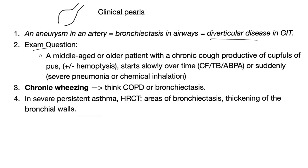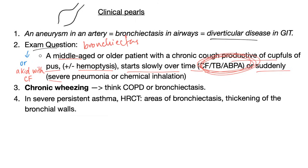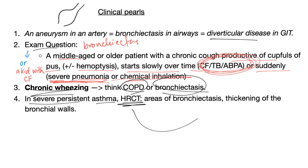Exam question tip: any patient with bronchiectasis on your exam will be described as a middle-aged or older patient with chronic cough productive of cupfuls of foul-smelling pus, possibly with hemoptysis. Onset may be gradual if due to an underlying condition, or sudden if due to severe pneumonia or chemical inhalation. Chronic wheezing can suggest COPD or bronchiectasis. In severe persistent asthma, high-resolution CT may show areas of bronchiectasis and bronchial wall thickening.